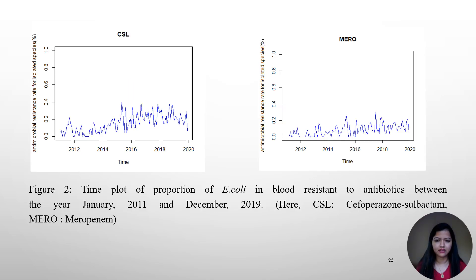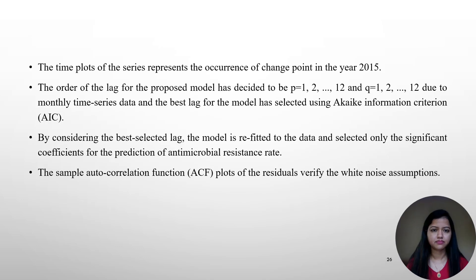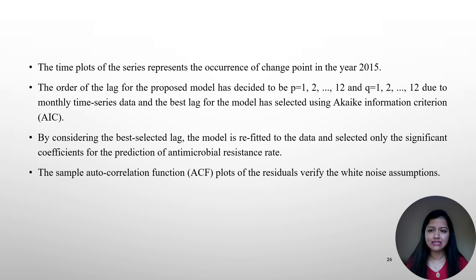Similarly, the time plots for CSL and meropenem also show a change point in 2015. Based on ACF and PACF plots, it was difficult to decide on the order for P and Q, so I considered order P = 1 to 12 and Q = 1 to 12. All combinations of P and Q were fitted to the model and the order was finalized based on AIC information criteria. Once the order was decided, I refitted the model and considered only the significant variables, then plotted the sample autocorrelation function to check the white noise assumption for residuals.